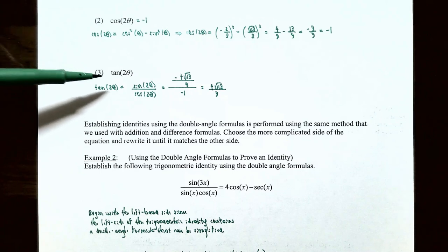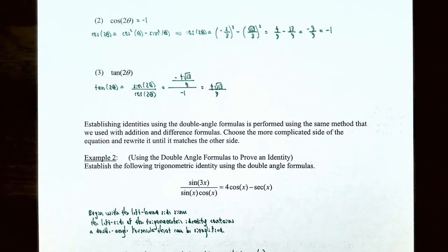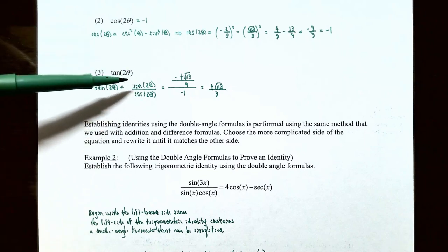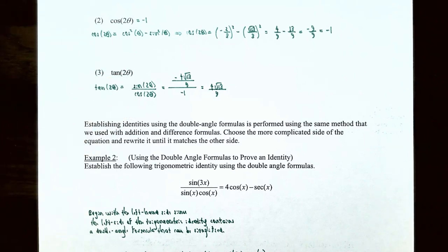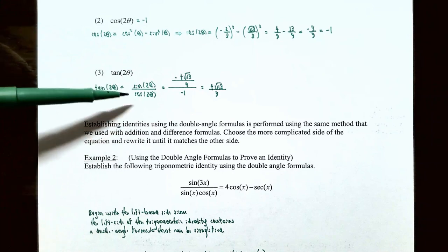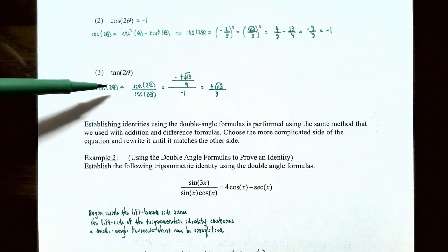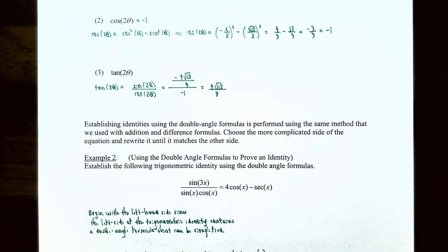For part 3, tangent of 2θ equals sine(2θ) divided by cosine(2θ). Using results from parts 1 and 2: sine(2θ) was −4√13/9 and cosine(2θ) was −1. So tangent(2θ) equals 4√13 divided by 9.